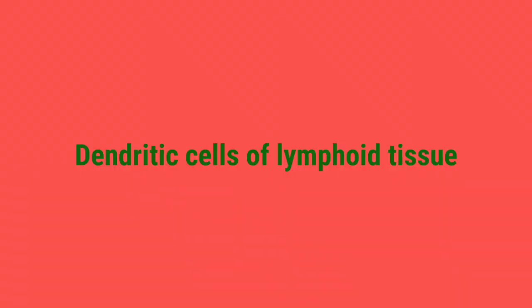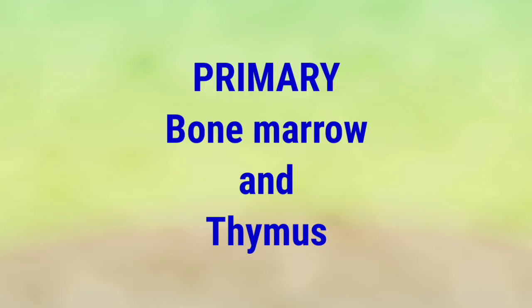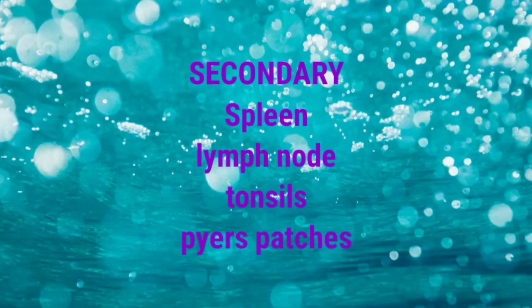Next in the line is the dendritic cell of the lymphoid tissue. Lymphoid tissue can be subdivided into primary lymphoid tissue — comprising the bone marrow and the thymus — and secondary lymphoid tissue — comprising the tonsils, the spleen, Peyer's patches, and lymph nodes. These dendritic cells have dendritic cytoplasmic processes and large quantities of human leukocyte antigen type 2 on their surface. They are not good phagocytic cells.